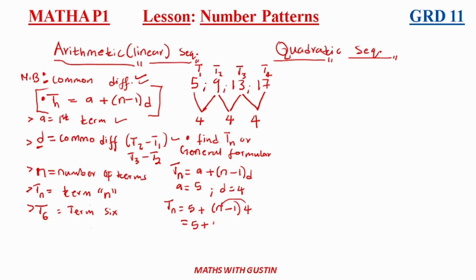Simplifying: Tn = 4n + 1. That is the general formula for this pattern. I will link a video at the end showing more examples. Let's now move on to the quadratic pattern.